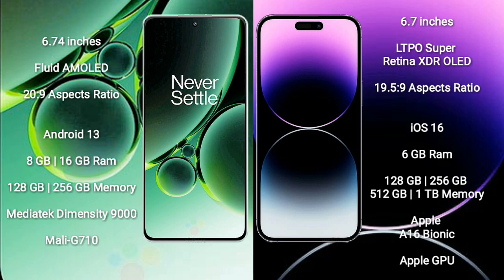iPhone 14 Pro Max comes with 6GB RAM, and 128GB, 256GB, 512GB, or 1TB internal storage. It features the Apple A16 Bionic processor with Apple Graphics GPU.